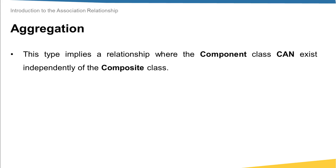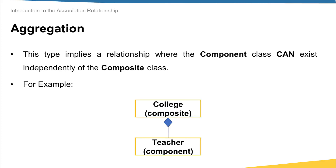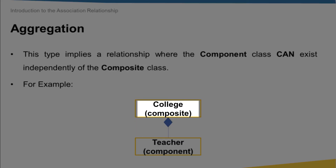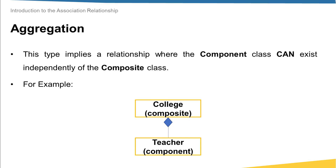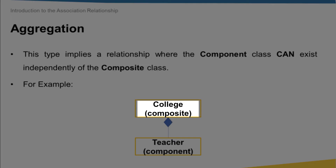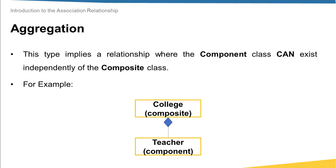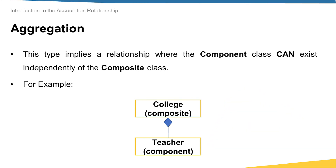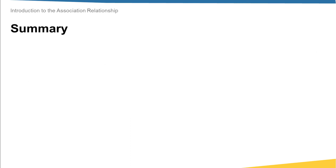Second, let's talk about aggregation. In this relationship, the component class can exist independently of the composite class. An example is the relationship between a college class and a teacher class. We can define a teacher object that is part of a college, but the teacher could also be a freelance teacher not part of any college. From this we understand that the object can exist independently of the composite class.